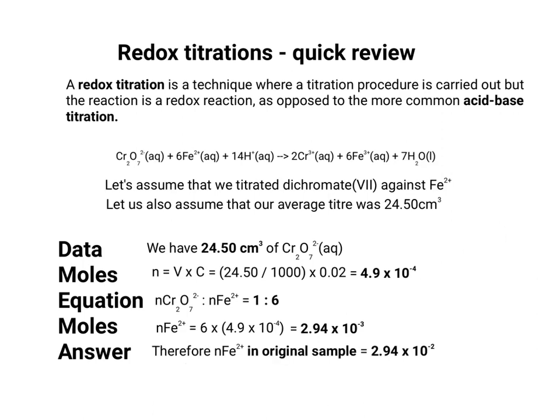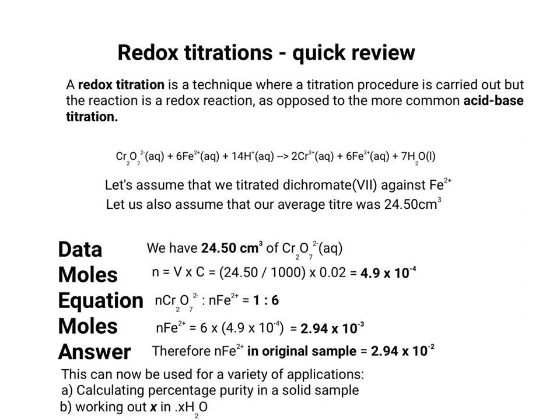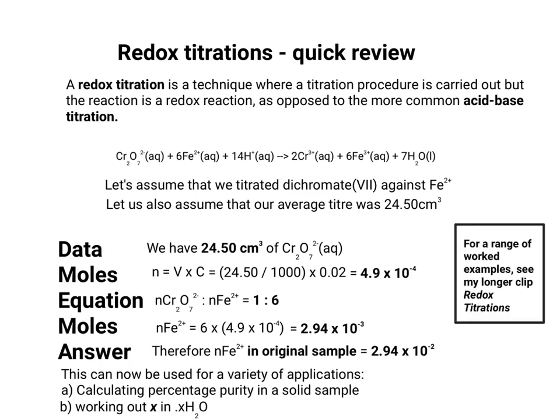We can then use this to do further calculations depending on why we performed the redox titration. The titration tells us how many moles of pure iron 2+ were in the original sample — we might be calculating percentage purity, or working out the number of moles of water of crystallisation in a hydrated salt. For full worked examples, see the longer clip called 'Redox Titrations'. Thanks for listening, and see you soon.